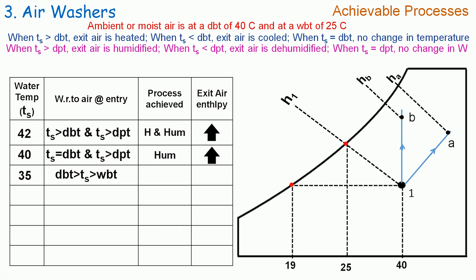Let us now supply the spray water temperature at 35°C. Here TS is less than DBT, hence the air is cooled. And TS is greater than dew point temperature, hence the air is humidified. Therefore, the achievable process by the air washer is cooling and humidification. But please note that TS is greater than WBT here. If we plot it on the psychrometric chart, then process 1C represents it. The enthalpy HC is greater than H1, hence exit air enthalpy increases.